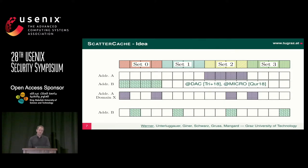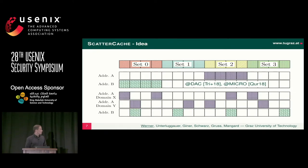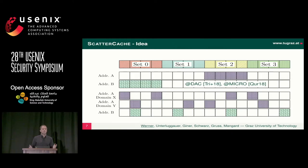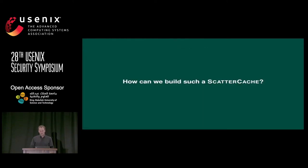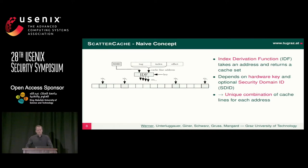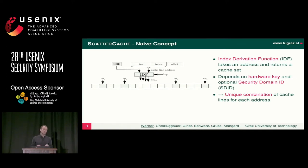Another cool thing we can do is introduce an additional context — a domain ID — into the mapping function. Before, for a first address we had certain cache lines; if we access the same address in a different domain, we can pick completely different cache lines. The idea is to introduce an index derivation function, which is basically a cryptographic primitive that derives from a cache line address, a key, and a domain identifier the cache indices used to form our cache set. We get unique combinations of cache sets, and there are a lot of them — it's essentially a combination with repetition.